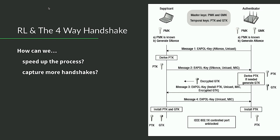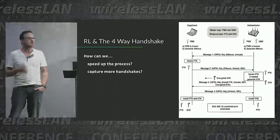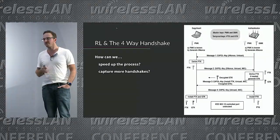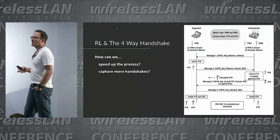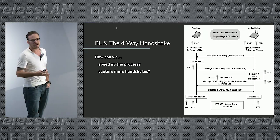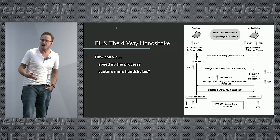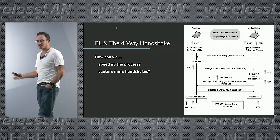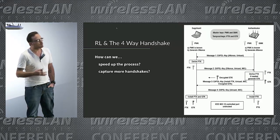Even if I have Keith's pre-shared key for his network, I can't just put that into Wireshark and decode his frames — I need that handshake exchange where transient keys are being created. RF is clear text, so we don't want to share that process openly; there's a give and take between the two sides. So how can we speed up this process to capture frames more efficiently? The more handshakes we get, the better our chances of deducing the pre-shared key by running them through tools like Hashcat.